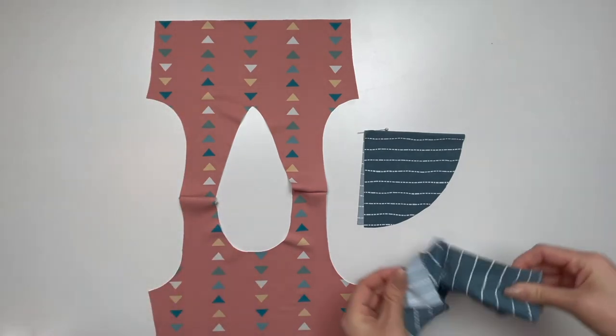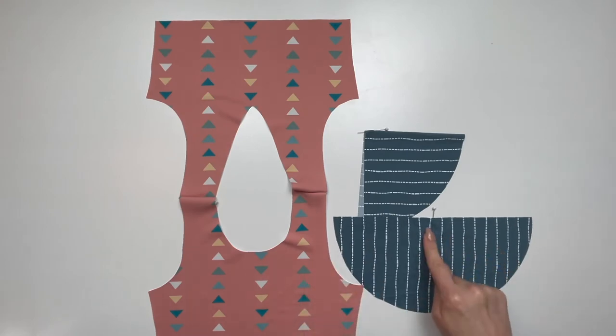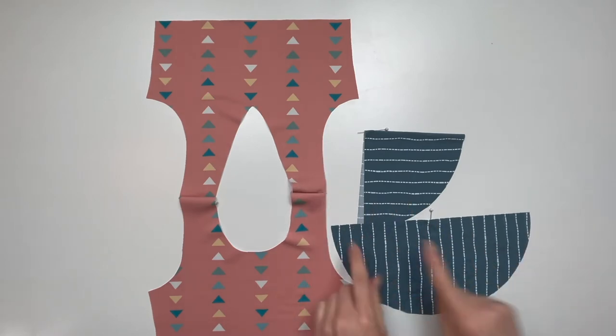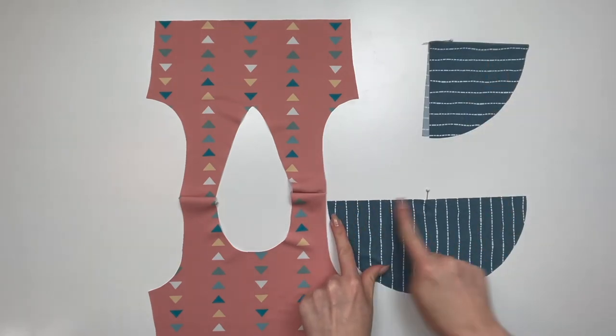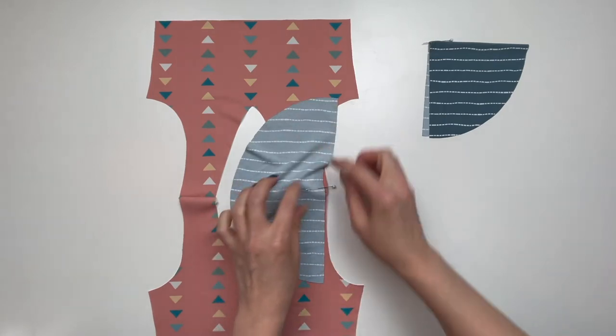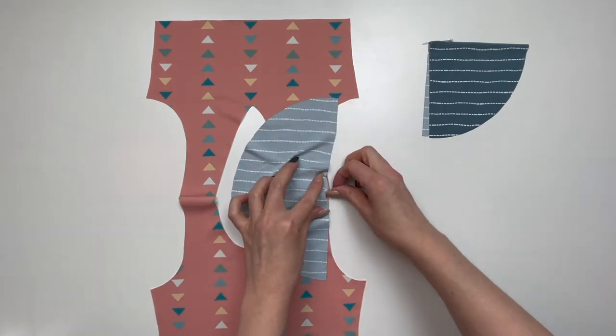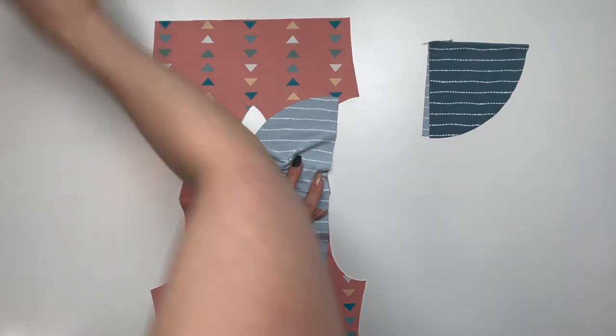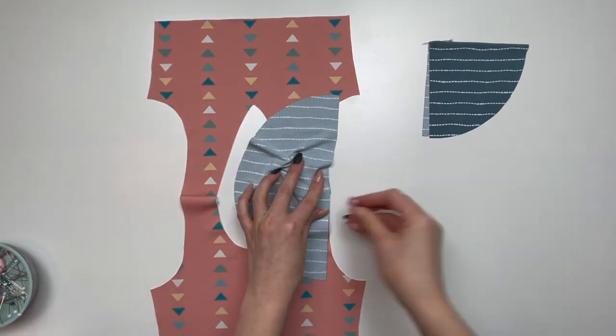Place your flutter sleeve right sides together with your bodice, matching the pin to the shoulder seam. Again, we're attaching along the straight side of the flutter. Pin or clip the remainder of your flutter sleeve to your armscye.